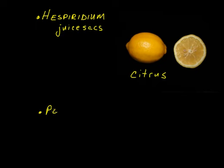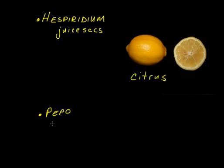The final of the fleshy type fruits are referred to as pepos. Pepos develop below the petals and they typically develop a hard rind. Examples of pepos would be things like various types of melons and also squashes.